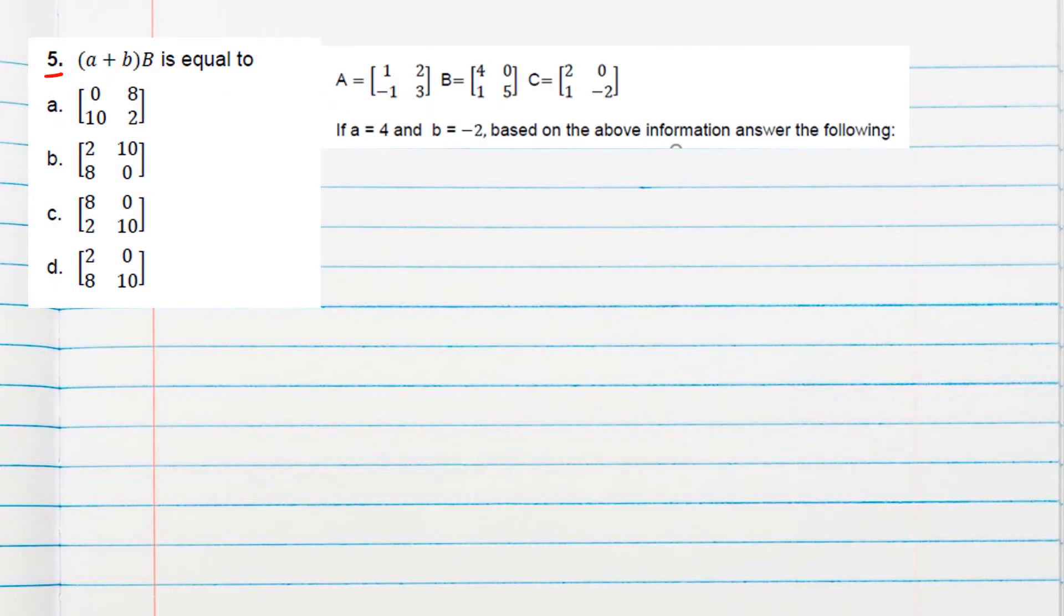Question number five is (A+B)B. We can add them: A+B will be 2. That means we need to find 2 times the B matrix, which equals [8 2 0 10]. In the options, [8 2] is only in one option - option C. So C option is the correct option.